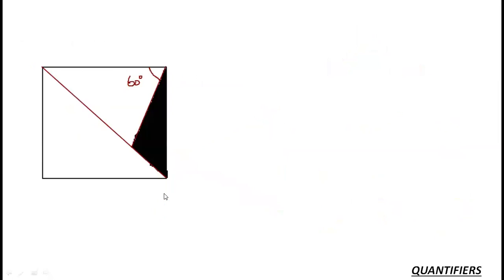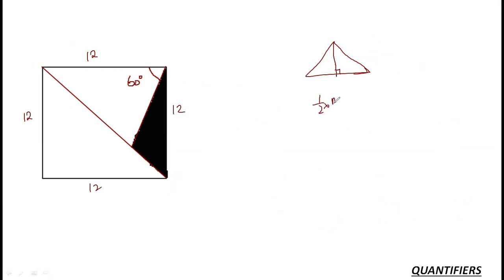Now for the second question: you need to find the area of the shaded portion. The square has side 12. For any triangle, I can calculate area in multiple ways — first by dropping a perpendicular: half × base × height. One of the angles given is 60°, so the adjacent angle in the square's triangle is 30°. I need to decide the best approach.